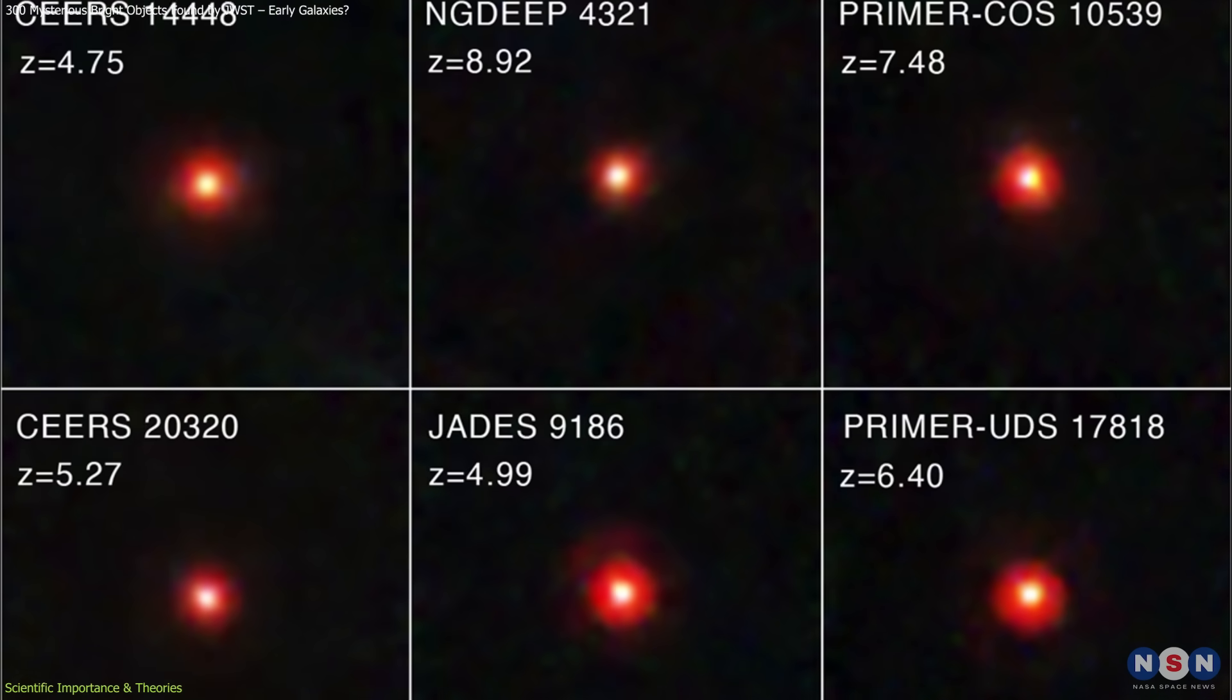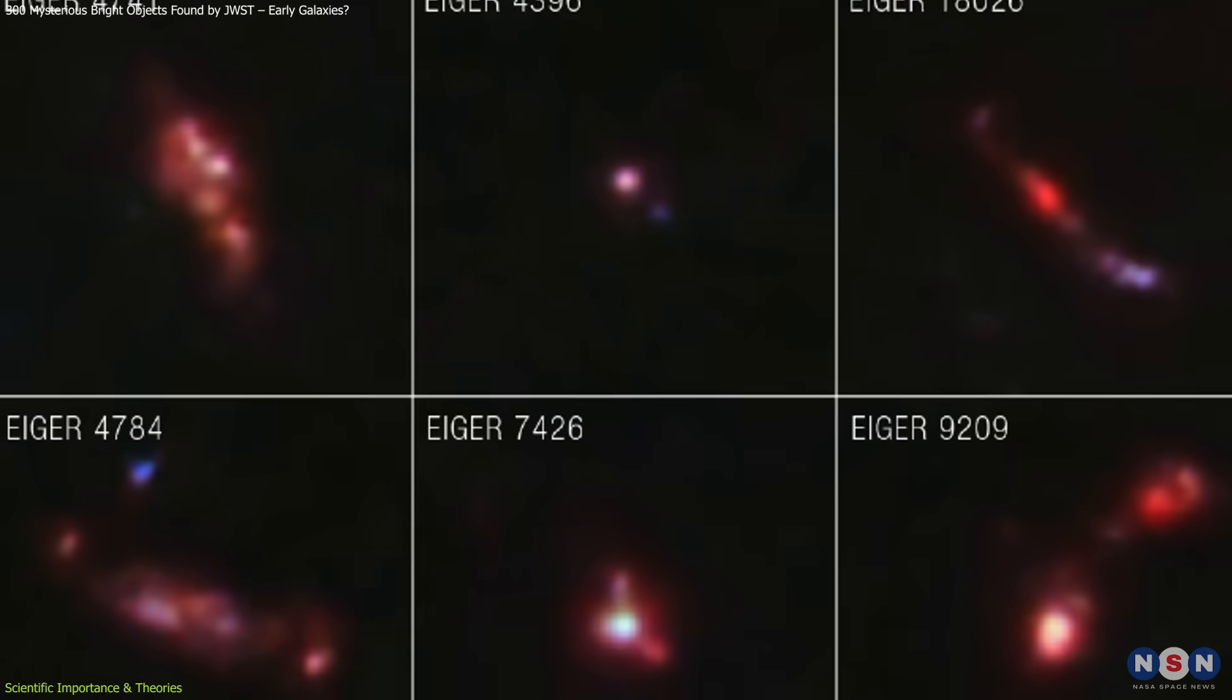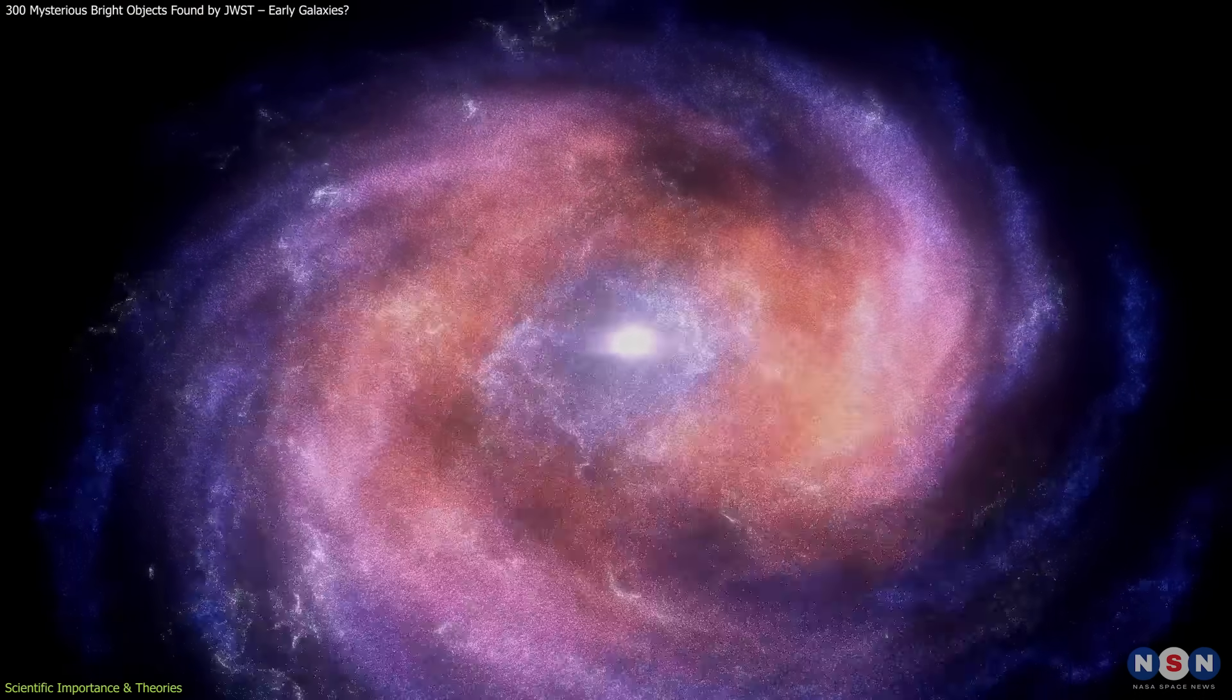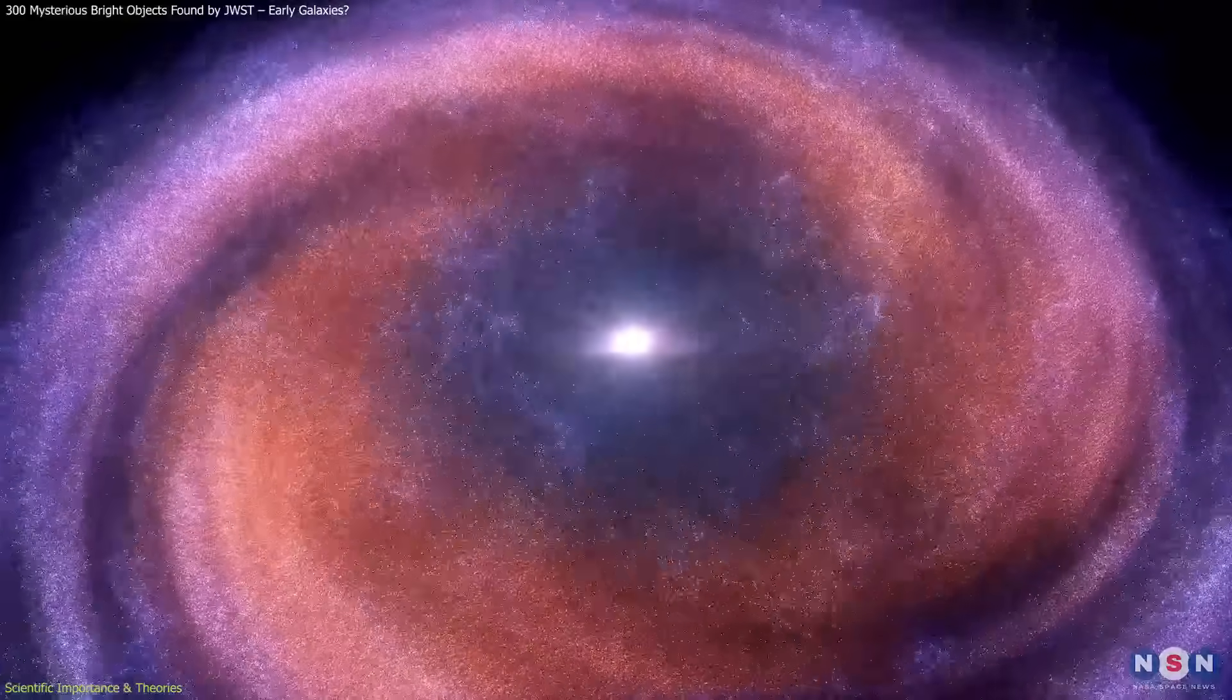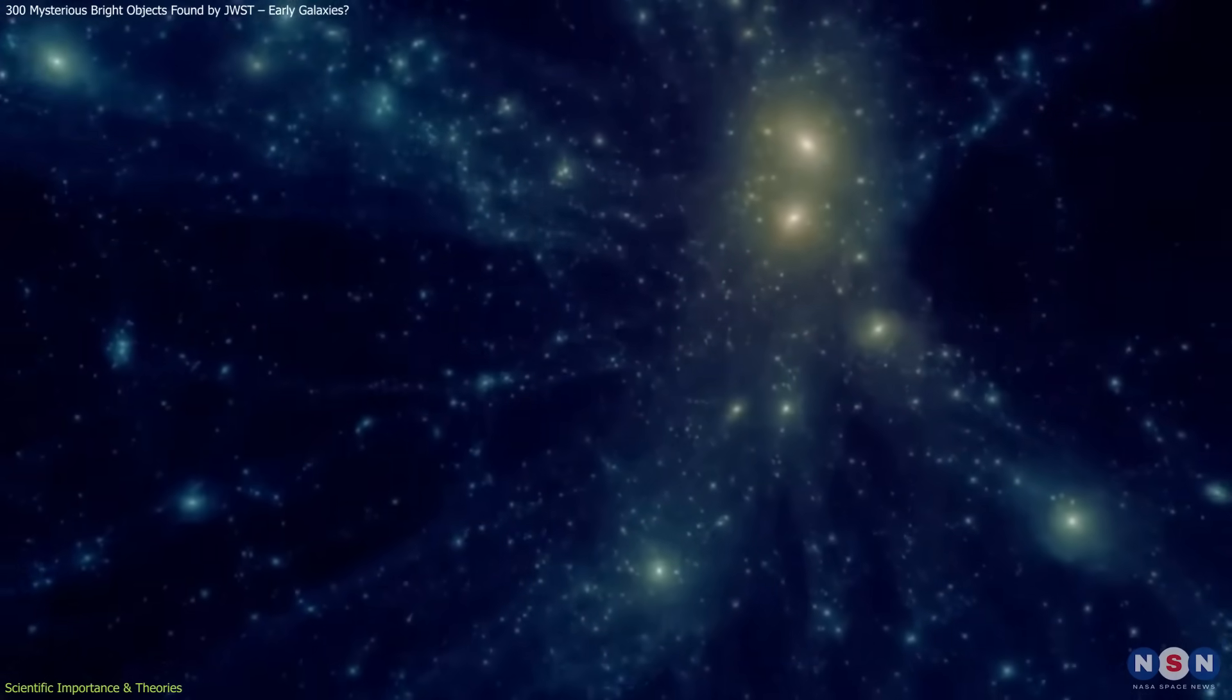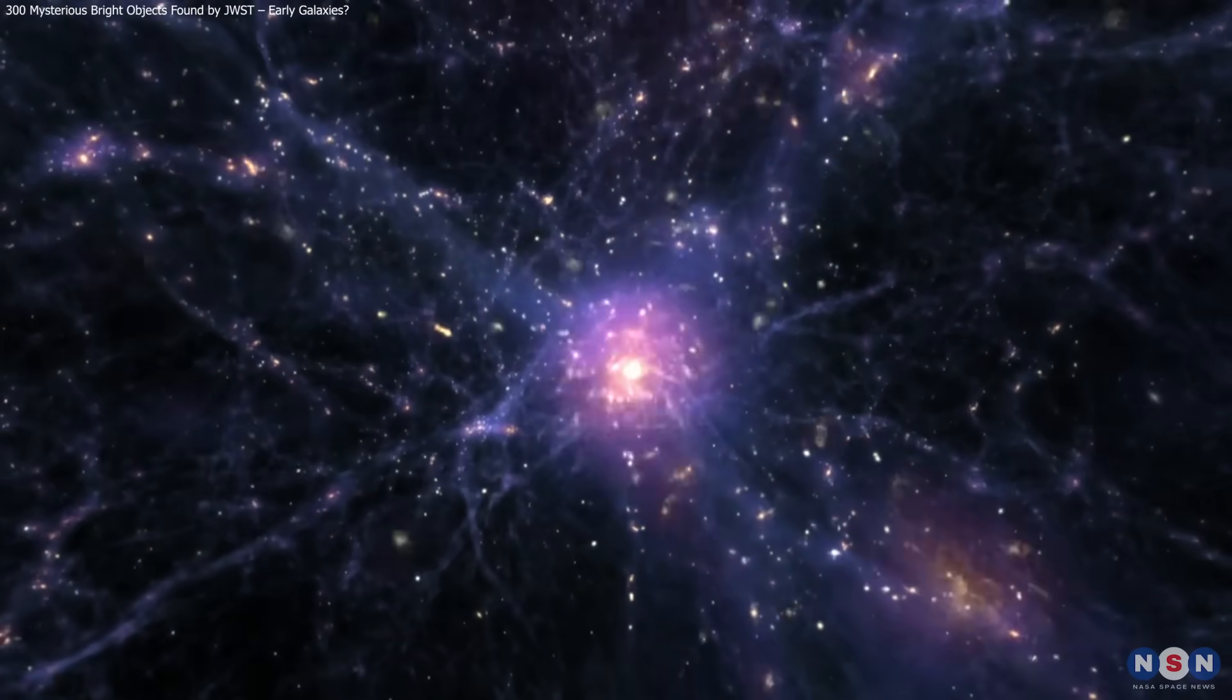JWST has repeatedly found bright, distant galaxies that seem more mature than expected, suggesting our models may underestimate star formation, gas cooling, or dark matter halo growth, and hinting at unknown factors in early galaxy formation.